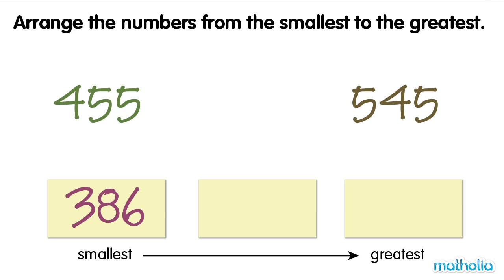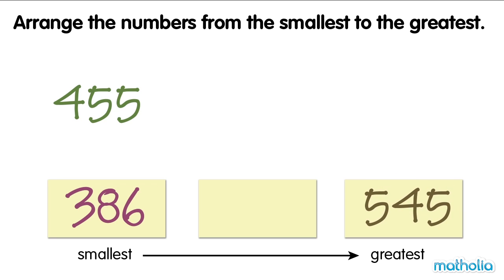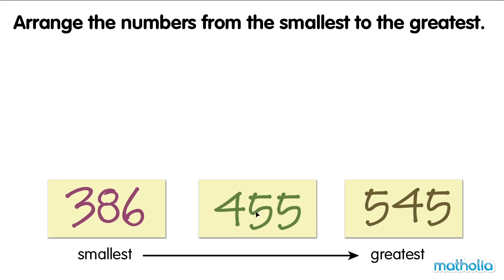Let's compare the digits in the hundreds place of the last two numbers. Four is smaller than five. Five is greater than four. So, five hundred and forty-five is the greatest number. From the smallest to the greatest, the numbers are three hundred and eighty-six, four hundred and fifty-five, and five hundred and forty-five.